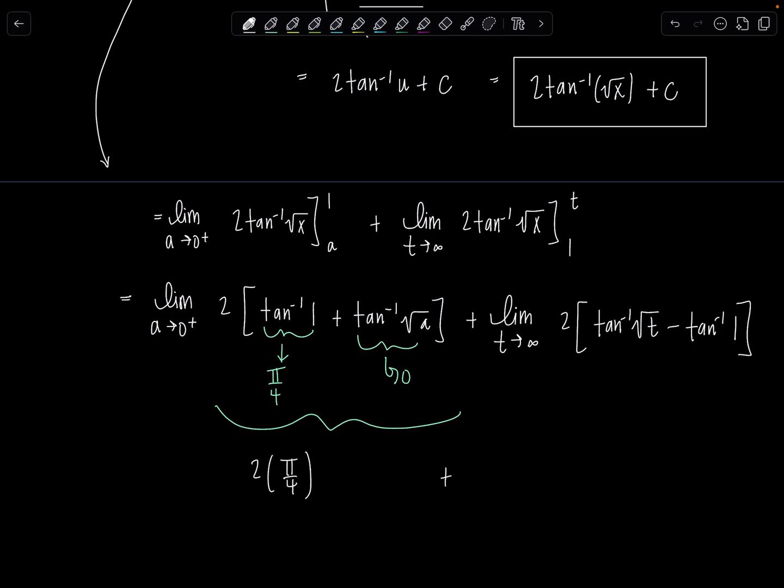And then here a is approaching zero from the right. Perfect. Because I can't take the square root. If it was approaching zero from the left, it wouldn't be defined. Only square roots of positive numbers make sense here. And then tan inverse of square root of zero is going to zero. Tan inverse of zero, zero. So this is approaching zero. So this whole first limit is approaching two times pi over four.